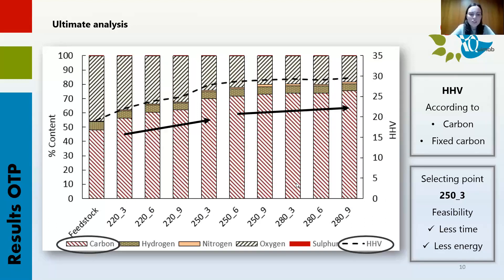In the ultimate analysis, it is clear that as severity of the process increases, carbon content also increases. Looking at the higher heating value represented by the dashed line, it increases until reaching the test carried out at 250 degrees in three hours, and then it is similar for the rest of the runs. This is in accordance with the carbon content and fixed carbon content. This provides important information: if we want to obtain a good quality solid fuel, there's no need to conduct HTC at temperatures higher than 250 degrees, nor keep the experiment more than three hours, making the process more feasible since it requires less time and energy.